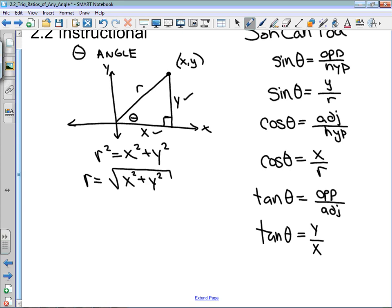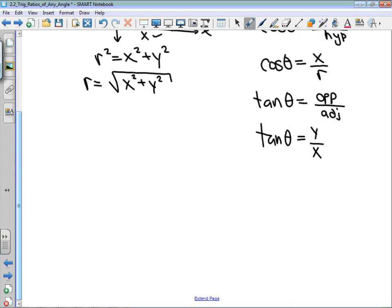x and y, on the other hand, can be negative. The bottom line is that I am going to look at sin theta being y over r, cos theta being x over r, and tan theta being y over x.